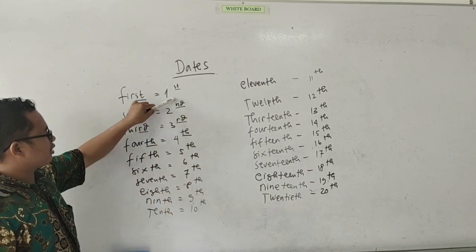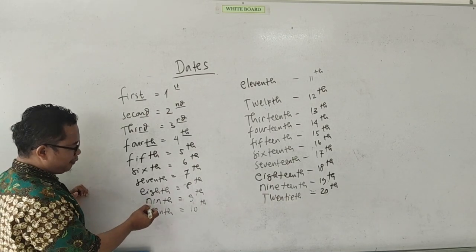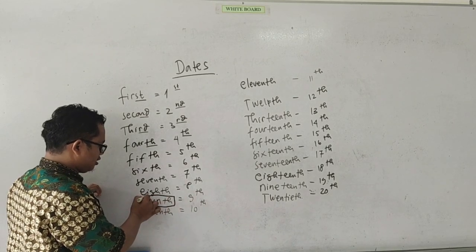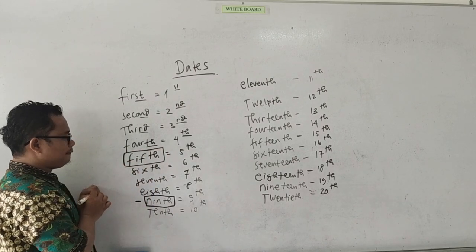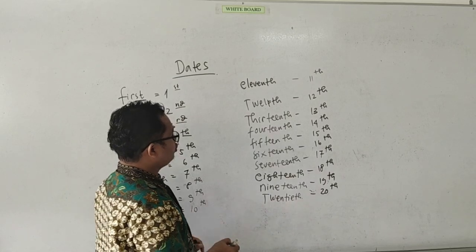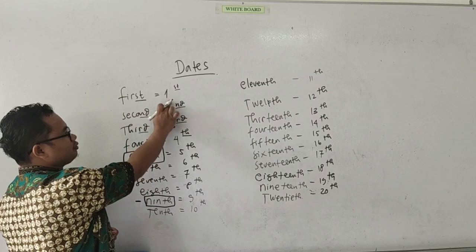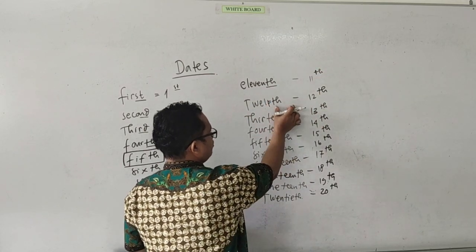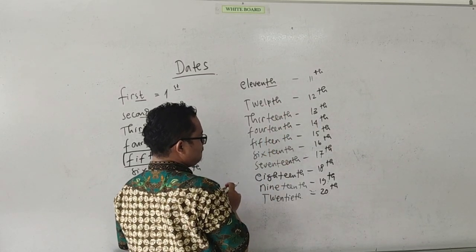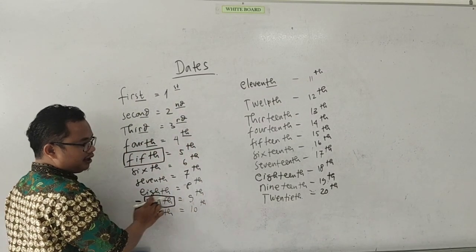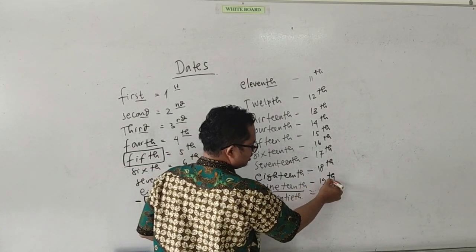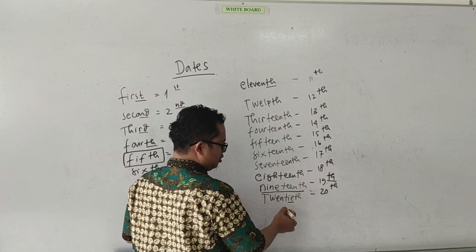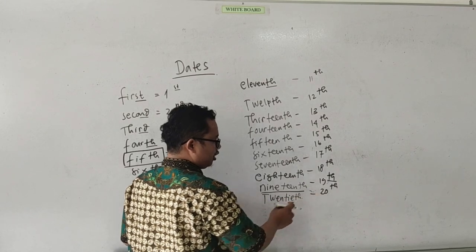Nah, perhatikan simbol-simbolnya, singkatannya, dan perhatikan cara penulisannya. Yang sering orang salah adalah dalam penyebutan 9, biasanya orang menggunakan kata 'nine', sementara yang disebutkan di sini adalah 'ninth'. Kemudian 5, ada 'fifth'. Nah di sini disebut sampai 20. Jangan salah, ketika 1ST di sini bukan menjadi ST, tetapi dia adalah TH, karena 11. Begitu juga dengan 12, 13. Kalau 9 adalah 'ninth', tetapi 19 yang disingkat dengan TH. 20, menjadi 'twentieth'. Ingat, pemakainya adalah IE, bukan Y. Jadi 'twentieth'.